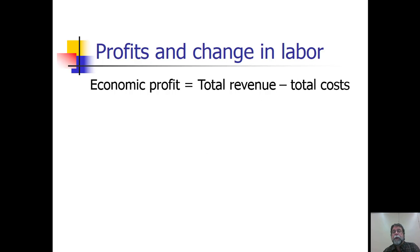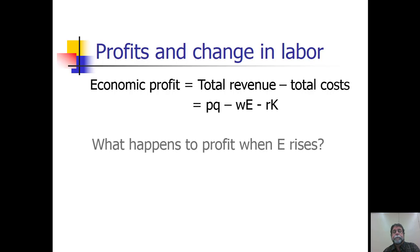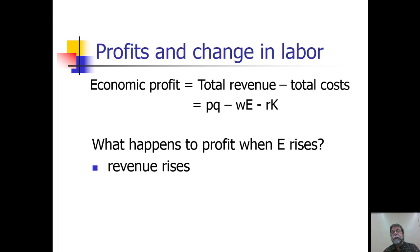Let's think about how a firm's change in its labor use can affect its profits. What's going to happen to profit when employment rises? Looking at the equation, we see two effects. On the one hand, if employment rises, because of the short-run production function, output rises, so the firm ends up with more revenue. On the other hand, cost rises as well, because you have to pay those workers. So the total effect on profit turns out to be ambiguous.